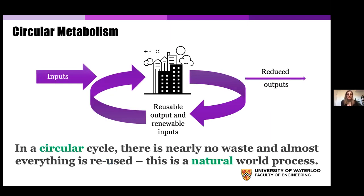Circular metabolism tries to tap into circular economy principles, where you've got the same inputs and outputs but the output arrow is much reduced from a linear metabolism flow, and much of the outputs are actually cycled back as inputs. In a circular cycle, there's usually very little waste and almost everything is reused. In this fashion it tries to mimic a natural world process — this is how nature behaves, and that's why nature is sustainable if we don't disrupt that cycle.